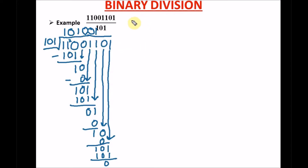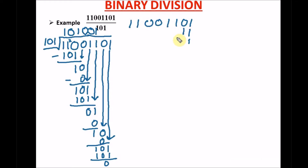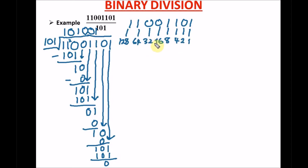Let's use a shortcut method to convert the dividend to base 10. We're converting from binary (base 2) to base 10. The positional values are: 1, 2, 4, 8, 16, 32, 64, 128. So for our binary number, we identify which positions have a 1 and we'll add up 128, 64, 4, and 1.